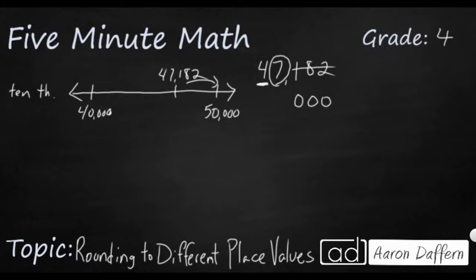That digit, if it's zero to four, it stays the same. So I'm going to put little arrows that mean stay the same. If that digit is five to nine, then it's going to go up. And so this seven has to decide what happens to this four. Does it stay the same or does it go up? Well, the seven is five to nine, which means this is your halfway point right here.